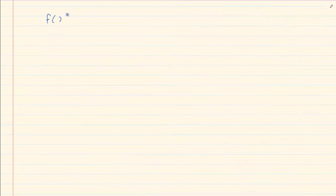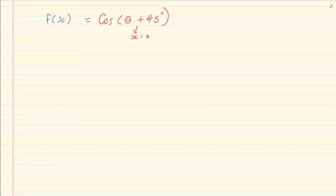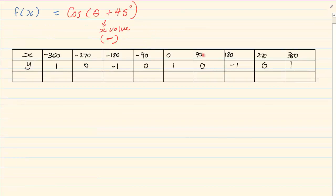Let us draw a graph that says f of x is equal to cos(θ + 45°). Remembering from your sin graph that if I am adding 45 degrees, then what am I doing to my x value? My x value — I am going to do the opposite, which is subtract. We know the standard points of a cos graph. I am subtracting 45 degrees from every x value.